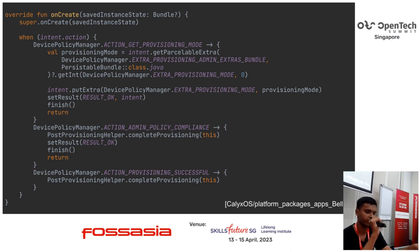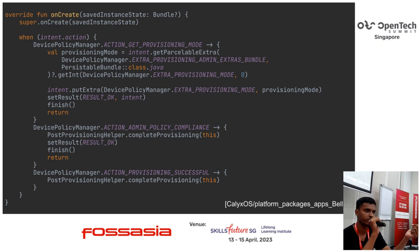When Pellets is launched, in the onCreate method, Pellets intercepts the intent that was sent by the setup wizard. There are three modes that Pellets can receive, which is action_get_provisioning_mode. The system asks what provisioning mode the device is going to be in, and Pellets simply tells it whatever the setup wizard set — it extracts the extra from the setup wizard's intent and puts it back. Then there is action_admin_policy_compliance and action_provisioning_successful. In the compliance part, we run whatever code we want to run after the setup wizard has finished — we call our complete provisioning method in which we set up various restrictions, such as enforcing an always-on VPN and restricting the installation of applications. For action_provisioning_successful, we call that method again to set different settings as required.